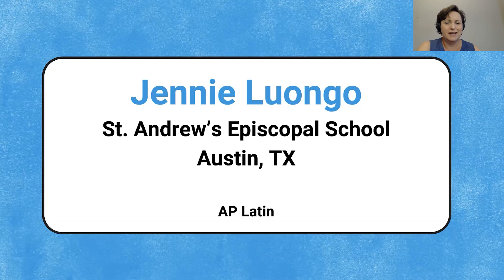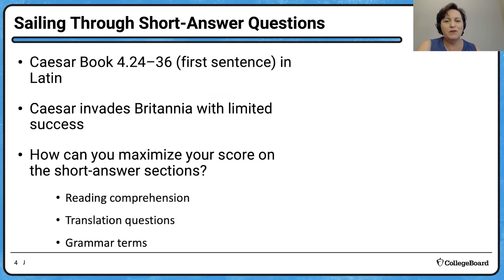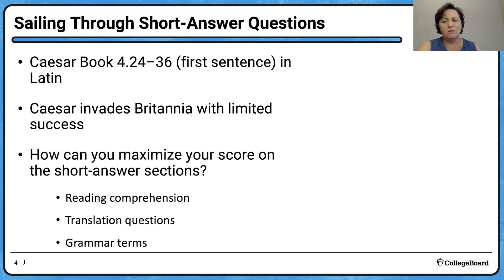Quid hodie discamus? What will we learn? Today we're going to be reviewing Caesar's De Bello Gallico book four. We have to read paragraphs 24 through 35 plus the first sentence of paragraph 36 for the syllabus. In it, we learn all about how Caesar invades Britannia. We're also going to be focusing on the short answer sections, talking about the types of reading comprehension and translation questions you might encounter, plus reviewing some grammatical terminology.